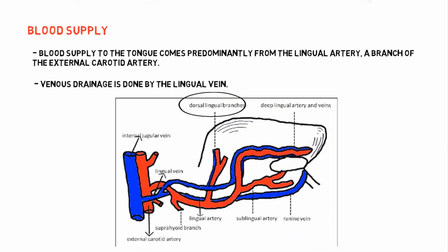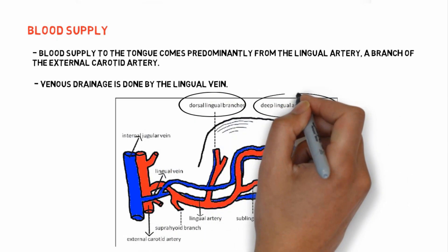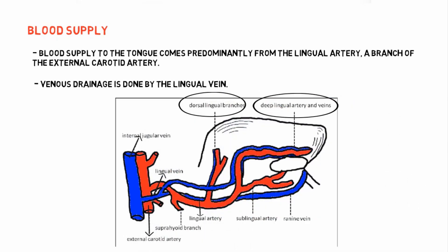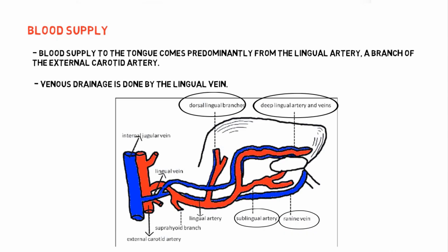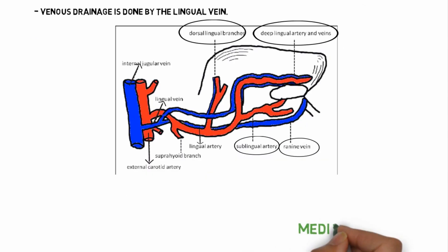The lingual artery and vein are further subdivided into dorsal lingual branches, deep lingual artery and vein, and sublingual artery and vein.